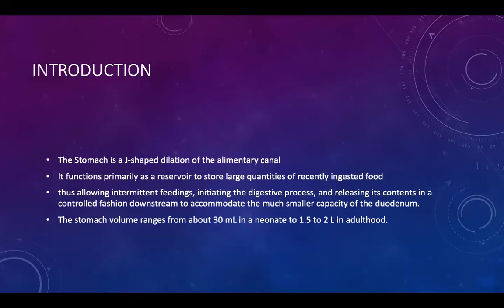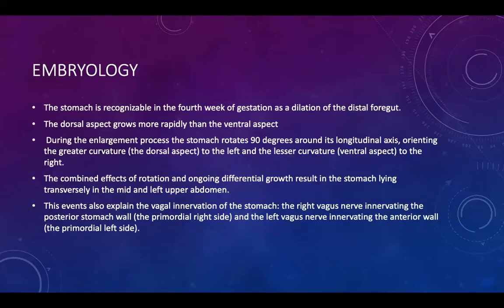As an introduction, the stomach is a J-shaped dilatation of the alimentary tract and it functions mostly as a reservoir, storing a large quantity of food. This food in the stomach will start the process of digestive function, then it will release slowly and gradually to the small caliber of the duodenum. The stomach volume ranges from 30 ml for a neonate up to 1.5 to 2 liters in the adult.